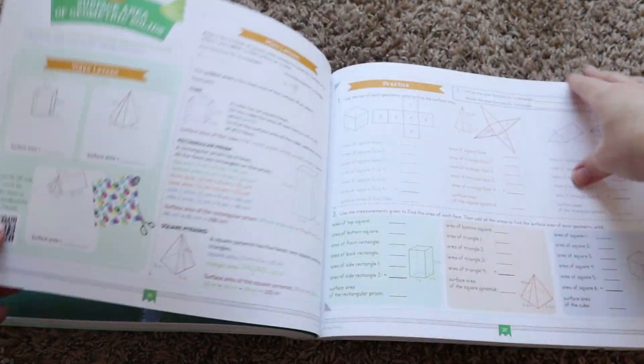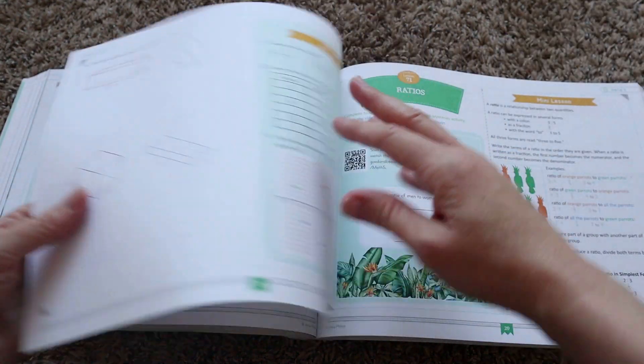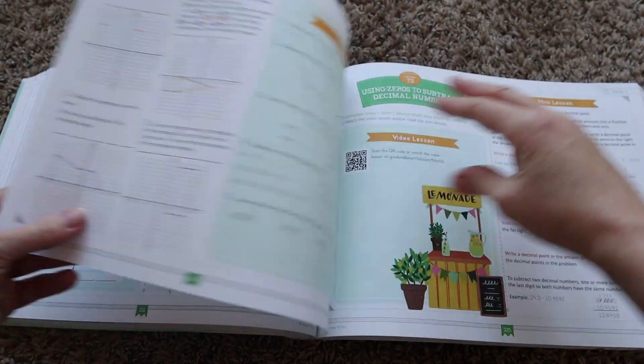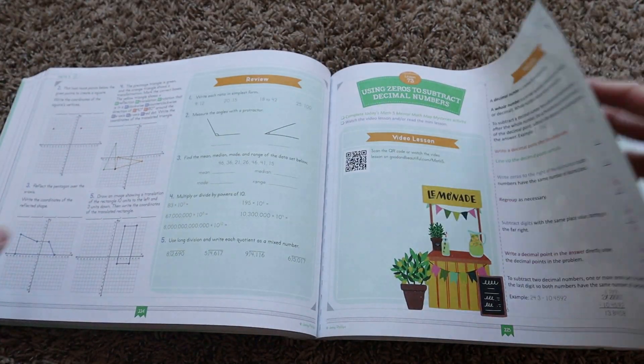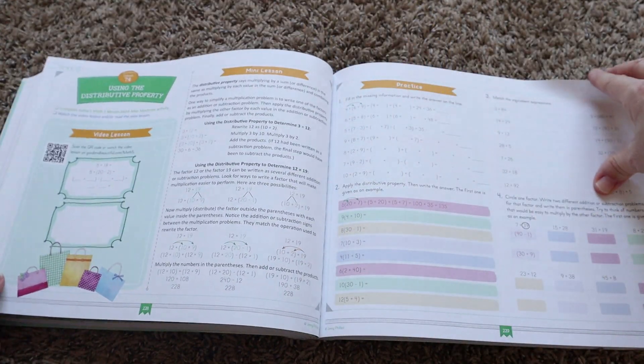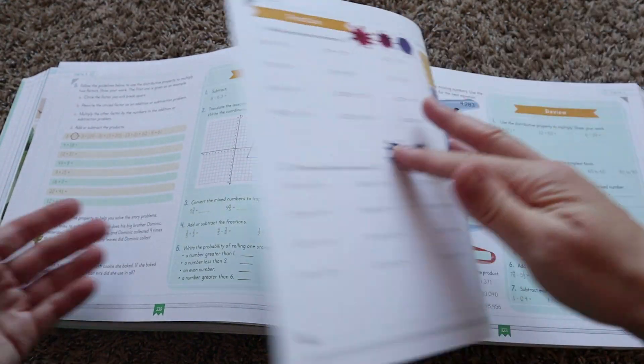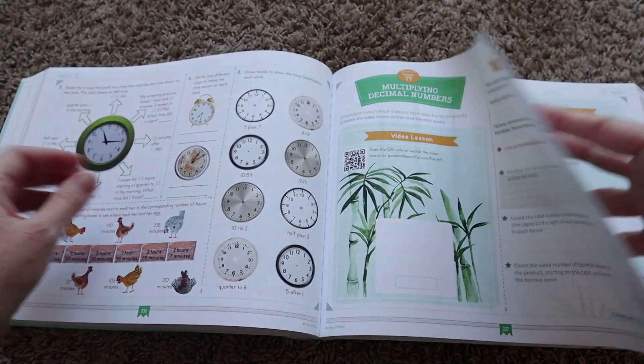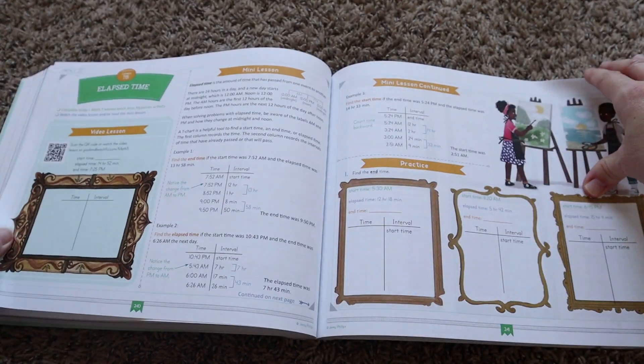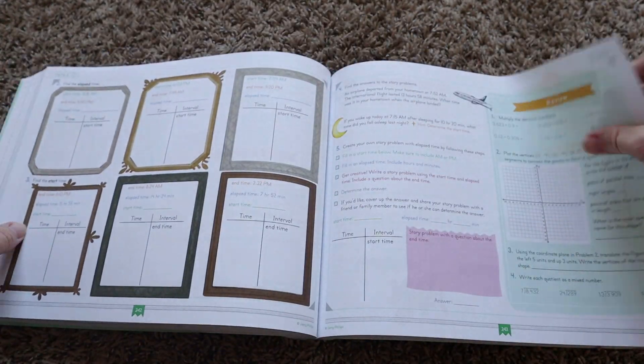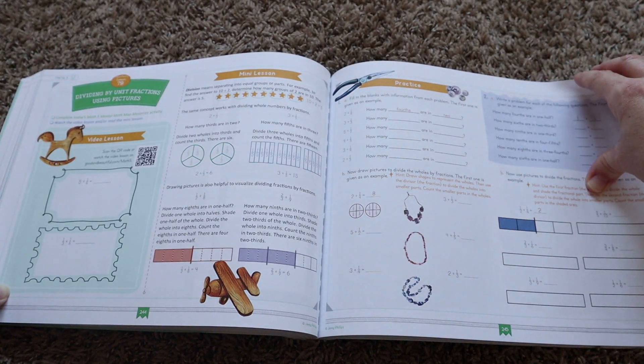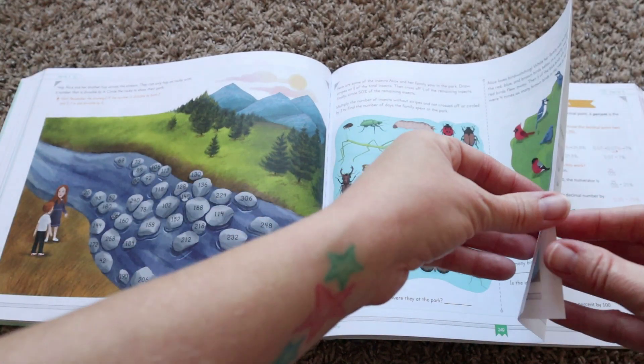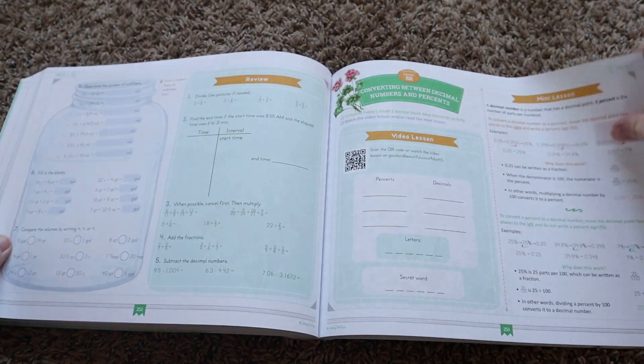But even though they don't have the math boxes, there are still going to be supplies that you're going to need for this. Some things are very basic, like scratch paper and you know, pencils, a ruler, and things like that. A few of the additional supplies that might not be as common is going to be a device to access videos, if you wish to use them, some paper clips, a coin, an index card, some tape, a protractor, and some dice. So nothing too crazy or expensive, but something that you definitely want to make sure that you have on hand before your child starts the curriculum.